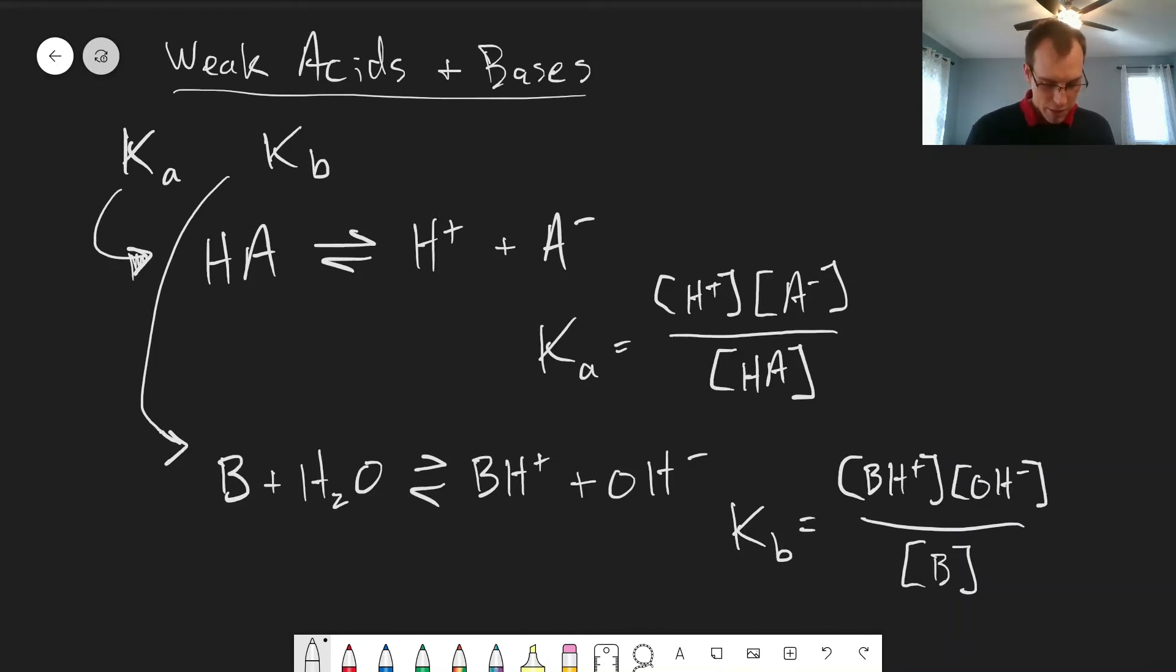Okay, so these are our definitions of weak acid and weak base. One other thing to point out is, of course, whenever we have a weak acid that dissociates here, we form its conjugate base on the other side of the equation here. And same thing for our weak base. For every base, there's a conjugate acid, and for every acid, there's a conjugate base. So we have our weak base B here, and BH plus would be its conjugate acid.